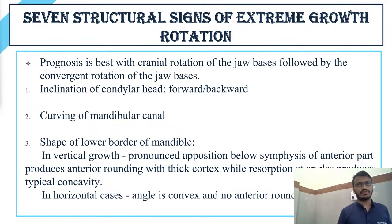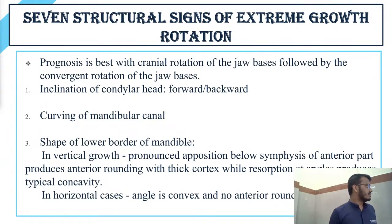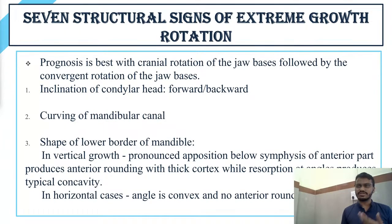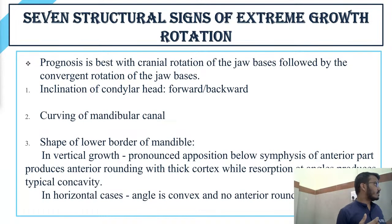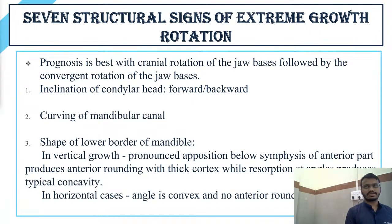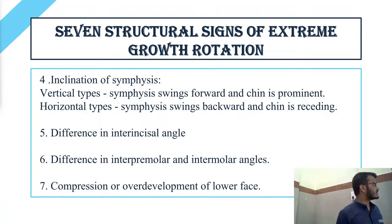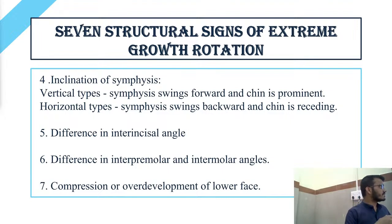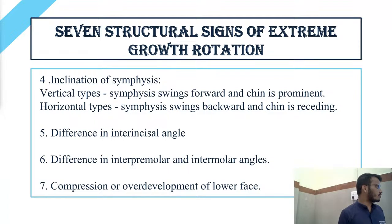Regarding the shape of the lower border of the mandible: in vertical growth pattern, there is pronounced apposition below the symphysis anteriorly with rounding and thick cortex, while resorption at the angles produces a typical concavity; in horizontal cases, there is no anterior rounding and the angle is convex. Regarding the inclination of the symphysis: in the vertical type, the symphysis swings forward and the chin is prominent; in horizontal types, the symphysis swings backward and the chin is receding.